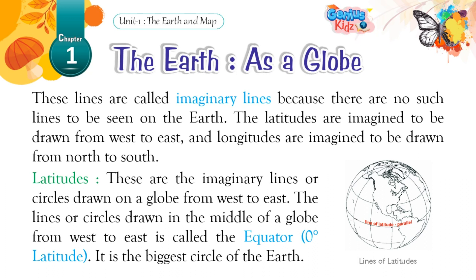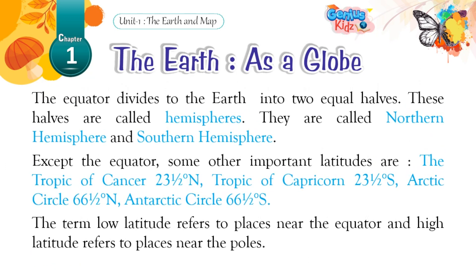Latitudes are the imaginary lines or circles drawn on a globe from west to east. The line drawn in the middle of a globe from west to east is called the equator — zero degrees latitude. It is the biggest circle of the Earth. The equator divides the Earth into two equal halves called hemispheres: the northern hemisphere and the southern hemisphere. Some other important latitudes are: the Tropic of Cancer (23.5° N), Tropic of Capricorn (23.5° S), Arctic Circle (66.5° N), and Antarctic Circle (66.5° S). The term low latitude refers to places near the equator, and high latitude refers to places near the poles.